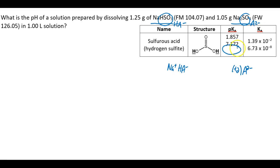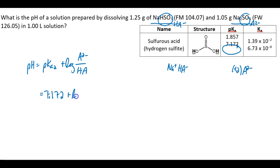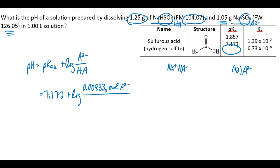We're using pKa2. pH equals pKa2 plus the log of A minus 2 over HA minus. Now it really does come down to plug and chug. pKa2 is 7.172 plus the log of A minus 2. You've got the grams and the formula mass — the moles of A minus 2. I got 0.00833 moles of A minus 2. For the moles of HA minus, again they gave us the grams and the formula mass. I got 0.0120 moles of HA minus. And finally, for the pH, I got 7.0173.